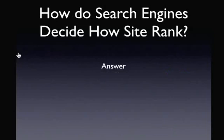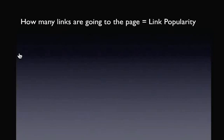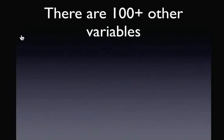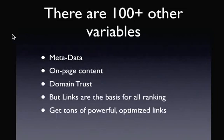So to answer the question — how do search engines decide how sites rank? — the answer is a link-based algorithm. They primarily look at: how many links does the page have (link popularity), how powerful are those inbound links (PageRank), and what does the anchor text in the link say (link reputation). There are also at least a hundred or more other variables, but the basis of all search is link-based. Metadata is important, on-page content is important, and domain trust is increasingly important — but links are the basis for all ranking. The moral of the story: get tons of powerful, optimized links if you want to rank highly.